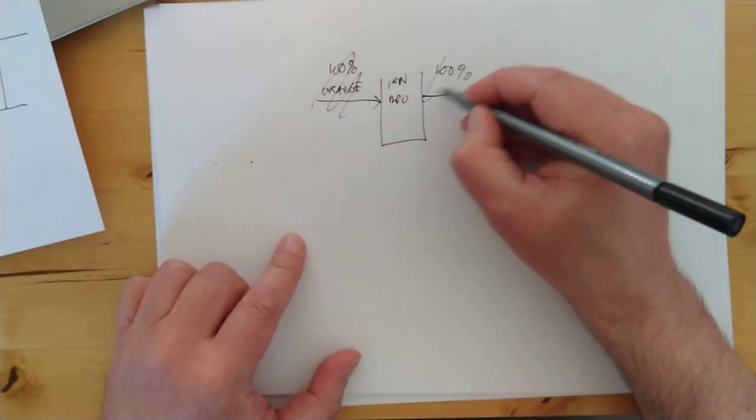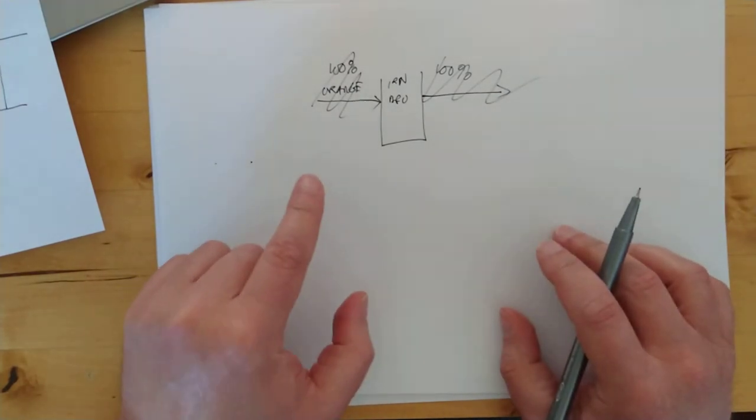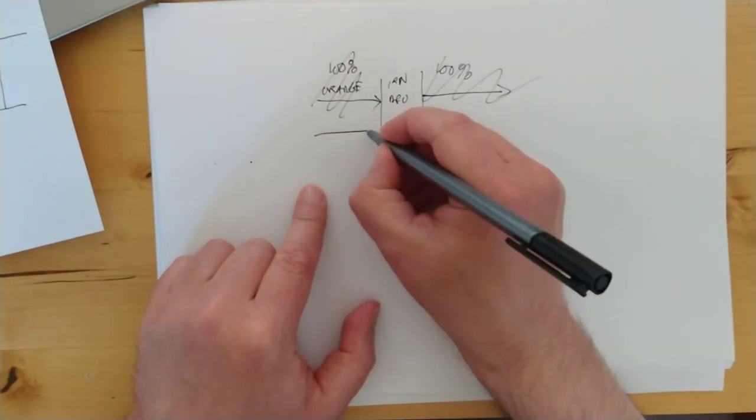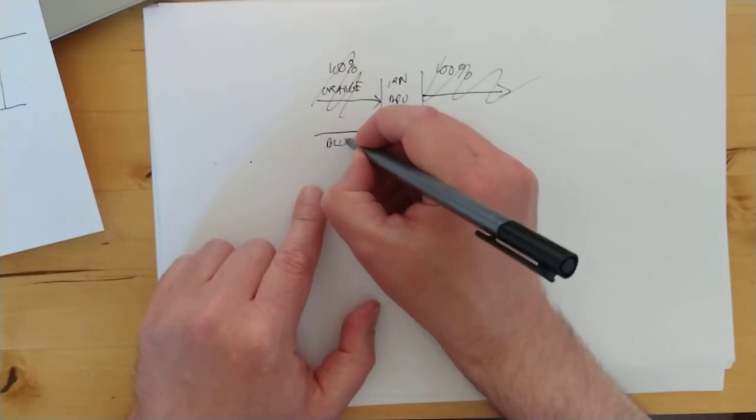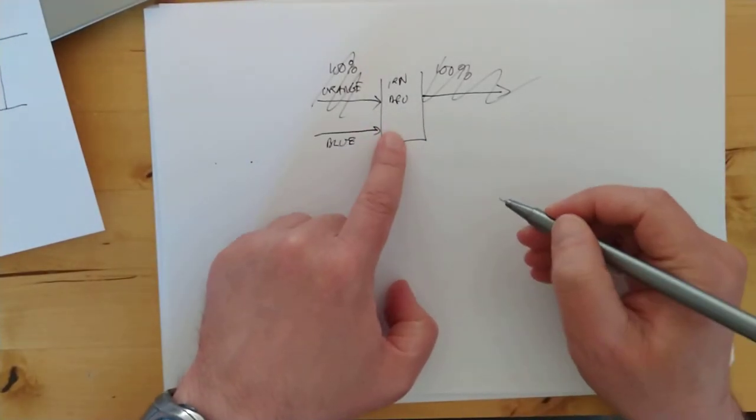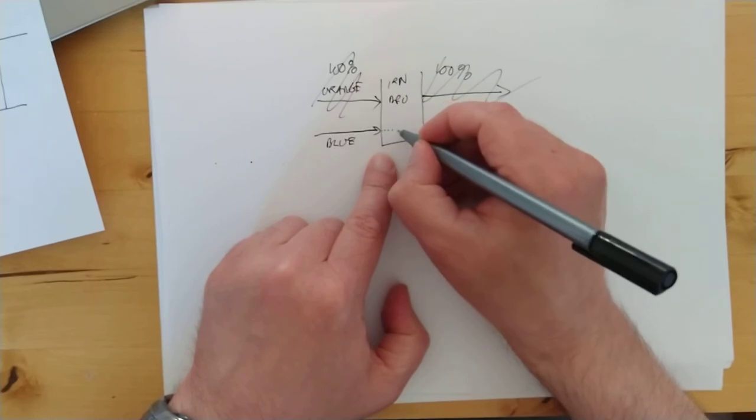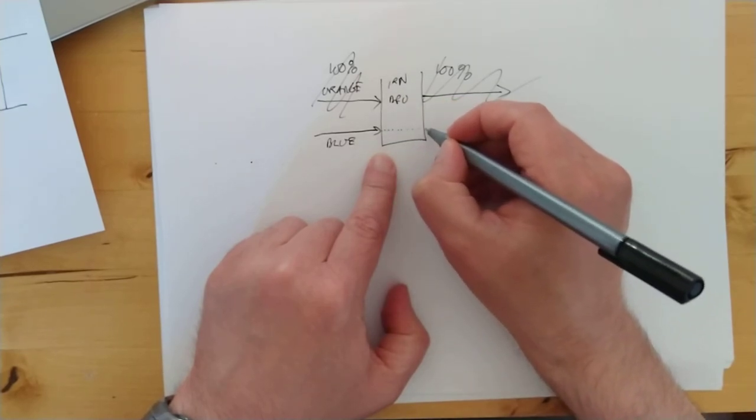Instead, what you should be putting in is one of the colors that is absorbed by the Iron Bru. So if we fire blue light in here, the higher the concentration of Iron Bru, the less of the blue light is going to make it out the far side.